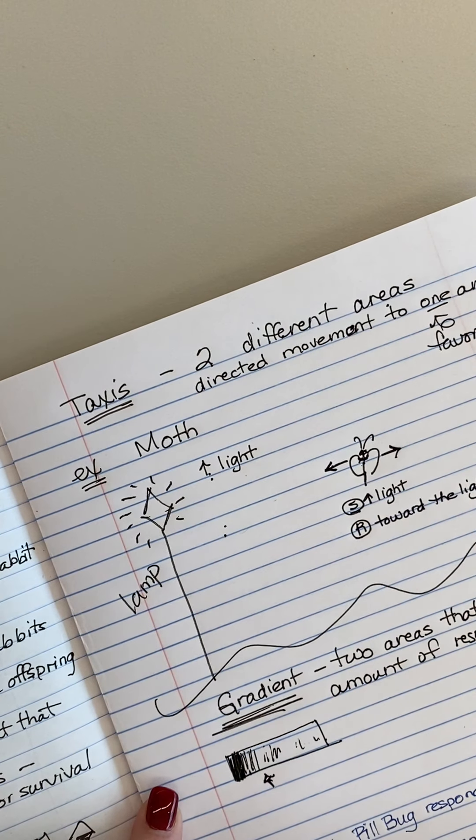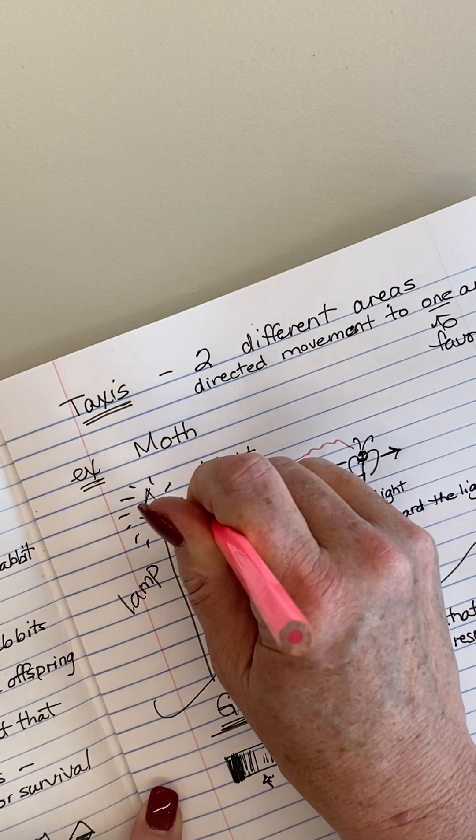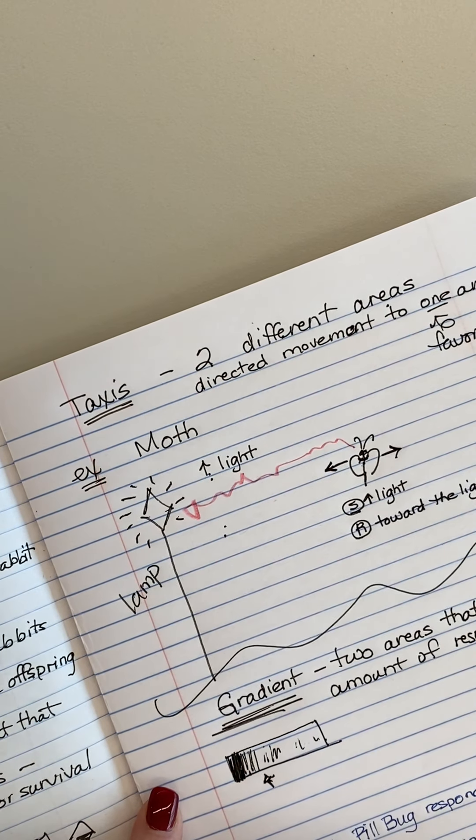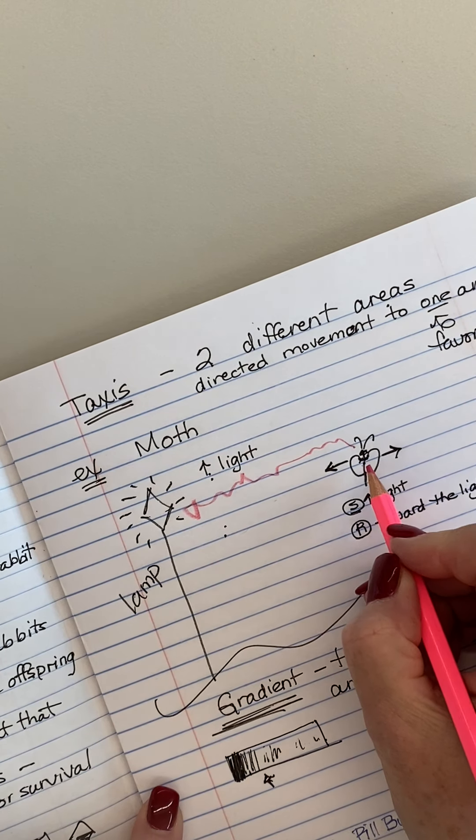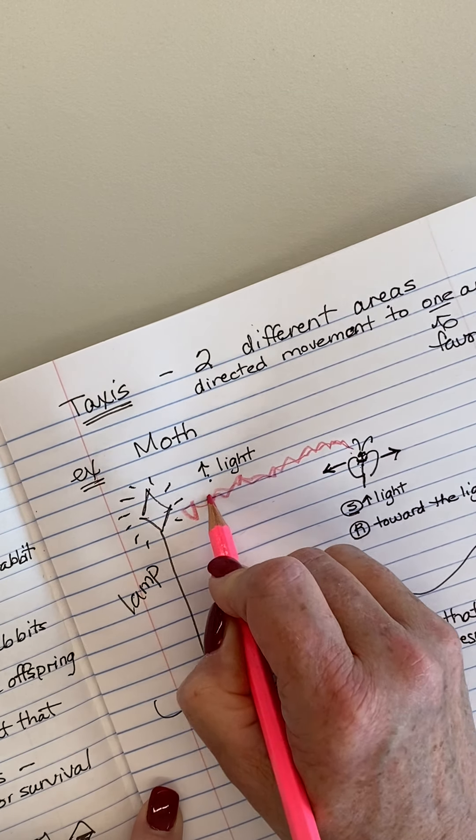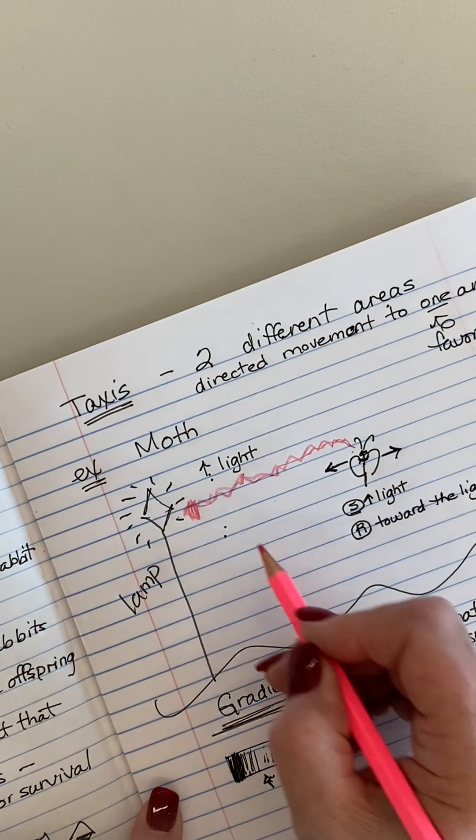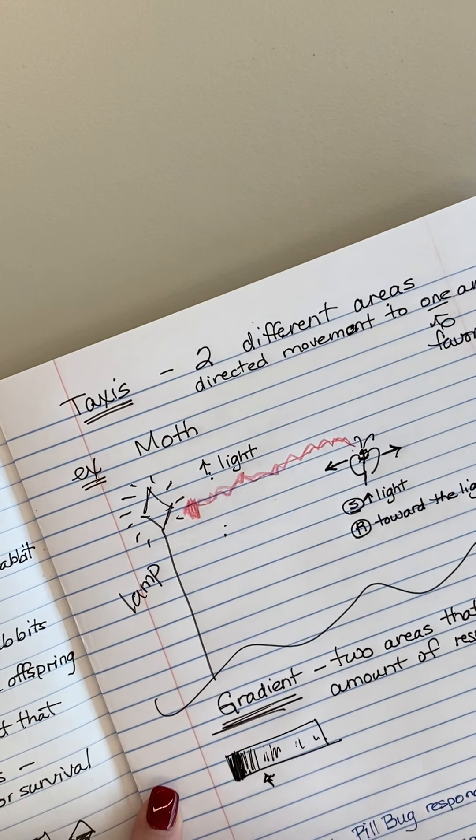So when it's this way looking, it perceives that there's more light coming into its eye than in this area. So it's perceiving both areas at the same time and the response for a moth is to move toward directed the light. So it would fly to the light. It's not going to do this, hey, is it good, is it bad, is it good, is it bad? It's going to go fairly directly toward either more or less in the gradient.